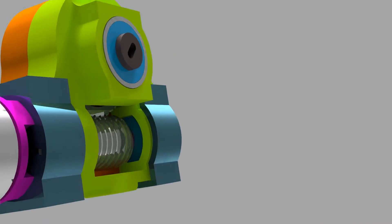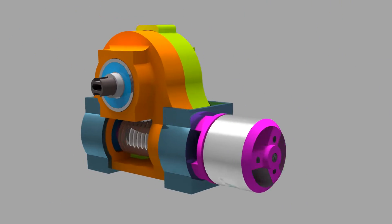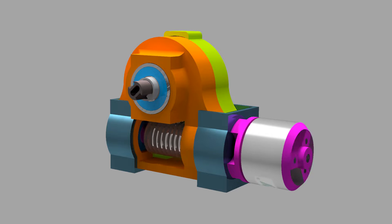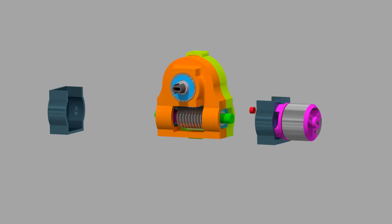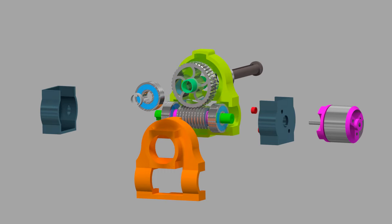Worm gears are self-locking, which means that the output is not capable of rotating the input. This can be a useful characteristic in many applications where position holding is critical or in situations where high driving shock loads are experienced on the output side.